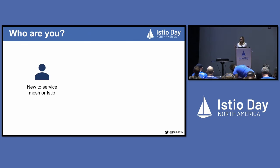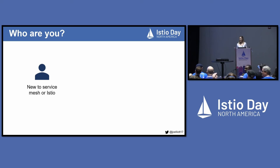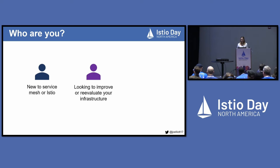Can I get a show of hands for who's relatively new to Istio and they're testing things out? Okay, so a lot of people. And who here feels like they're really well-established with Istio, they have an identity solution that works for them, or they're looking to reevaluate it?